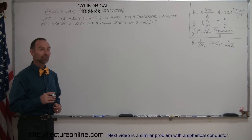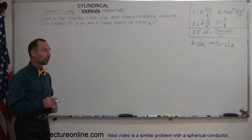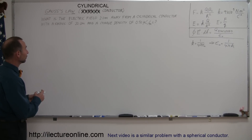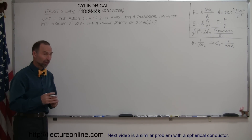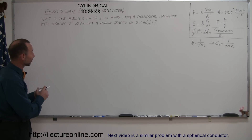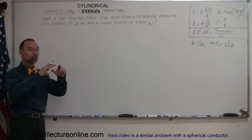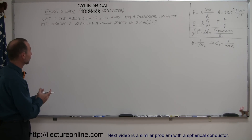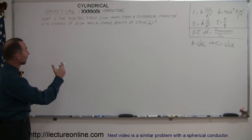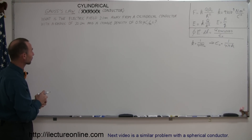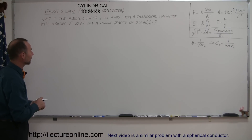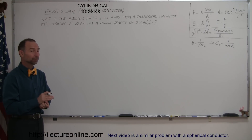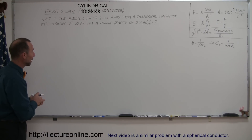Welcome to iLecture Online. Here's another example of how we're going to find the electric field near a special shaped object. In this case it's going to be a spherical conductor with a certain amount of charge on it. We need to find the electric field about two meters away from that conductor. This is under the title Gauss's law, because with Gauss's law this is really not that difficult of a problem.